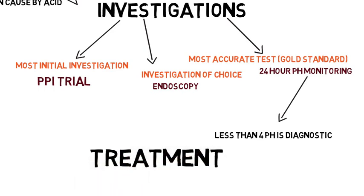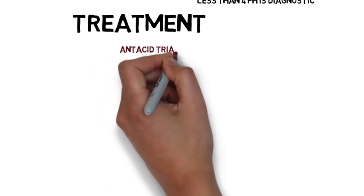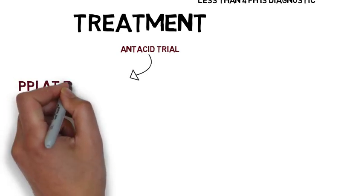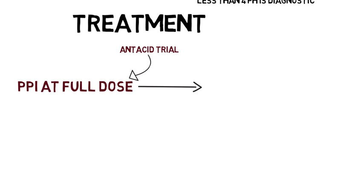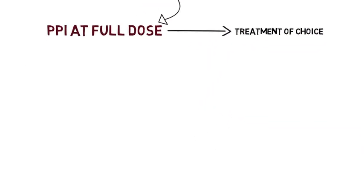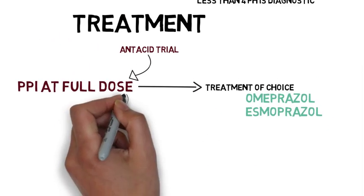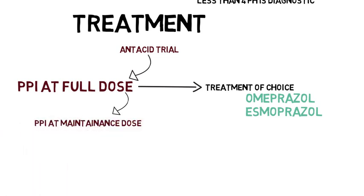Now let's discuss the treatment options available for GERD. First of all, give antacid trial to the patient. If the patient shows signs of improvement, go for proton pump inhibitor at full dose. Basically, this is the treatment of choice: PPI at full dose. The names are omeprazole and esomeprazole. If the patient shows good results, go for PPI at maintenance dose.